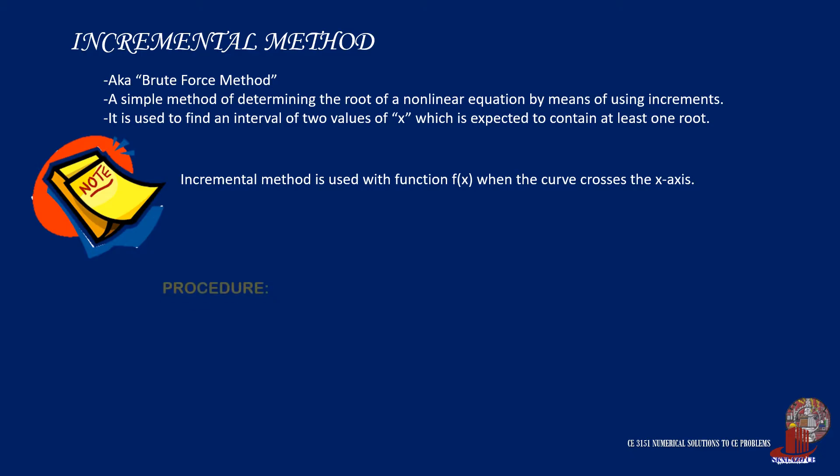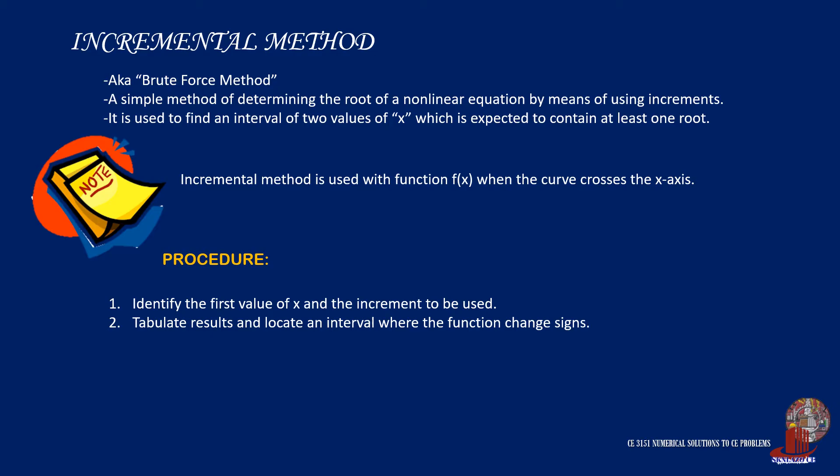The procedure starts by identifying the starting value of x and determining the interval to be used. Next is to plug in the chosen x values into the equation and tabulate results according to the intervals used. The key here is to locate the change of signs of the function x.